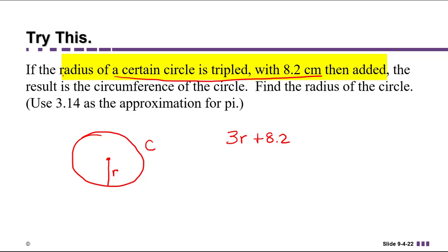Then the result is the circumference of the circle. That's another way of saying that you're going to get the circumference of the circle by doing that. Find the radius.